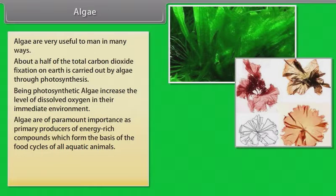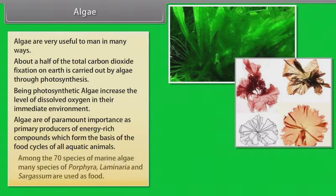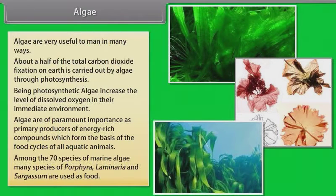Algae are of paramount importance as primary producers of energy-rich compounds which form the basis of the food cycles of all aquatic animals. Among the 70 species of marine algae, many species of Porphyra, Laminaria, and Sargassum are used as food.